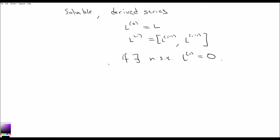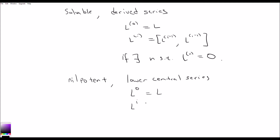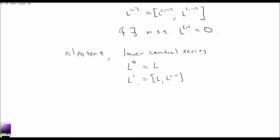Nilpotency is almost identically defined with a slightly different series. A Lie algebra is said to be nilpotent if its lower central series terminates. The lower central series is defined in terms of, instead of derived algebra, we bracket with L itself. The first term is L to the 0 equals L, and then L to the i is equal to L bracket L to the i minus 1. We say the Lie algebra is nilpotent if there exists n such that L to the n equals 0.